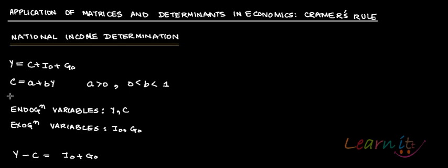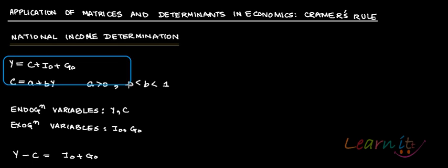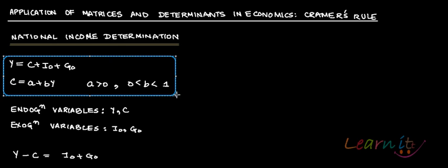C itself is determined using C = a + bY, where b is the marginal propensity to consume. This is a macroeconomic model. The model is given with the conditions that a > 0 and 0 < b < 1. Here b is nothing but the MPC.